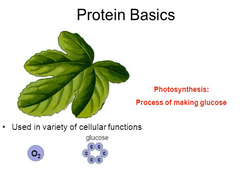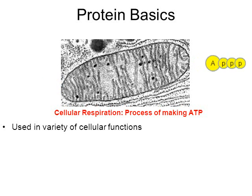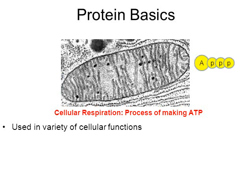Here's another example where proteins are used in cellular functions. The mitochondria does a process called cellular respiration. The mitochondria is an organelle — a part of your cell — and its job is to take in glucose and produce a molecule called ATP, which is an energy molecule. We'll learn about this in more detail later in the school year.